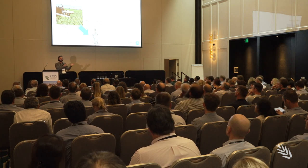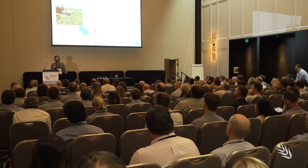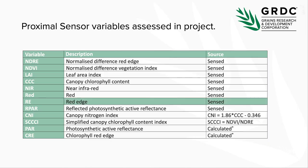These algorithms determined that two of the 12 variables were optimum predictors of mid-season N. Based on all the sensed variables, two were the most important for the N decision: the red edge wavelength, and the simplified canopy chlorophyll content index — an index of indices, being the ratio between NDVI and NDRE.